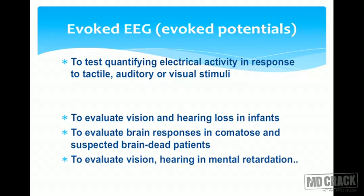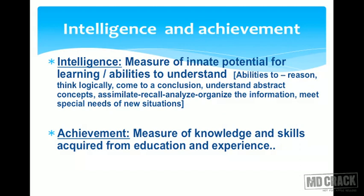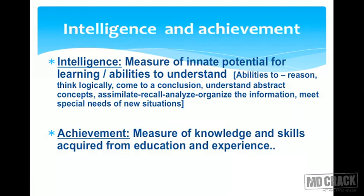Now we're going to discuss intelligence and achievement and how to test them. Intelligence is the measure of innate potential for learning or abilities to understand. This includes abilities for reasoning, thinking logically, coming to a conclusion, understanding abstract concepts, assimilating, recalling, analyzing and organizing information, and meeting the special needs of new situations.